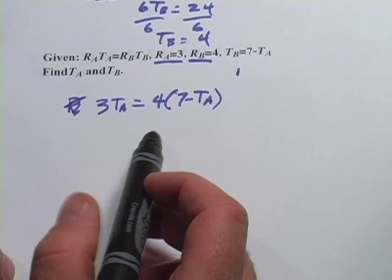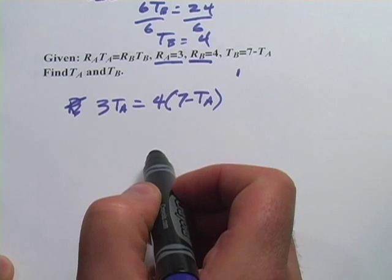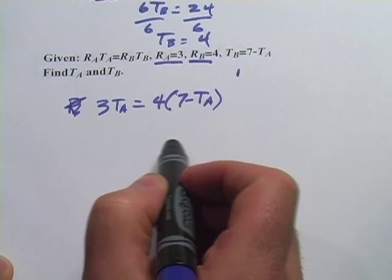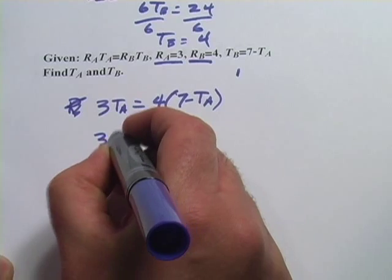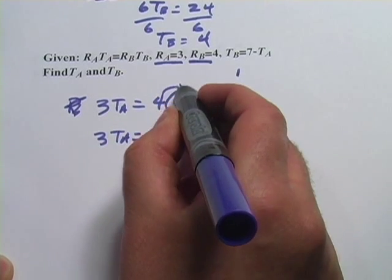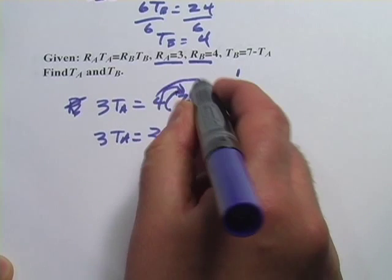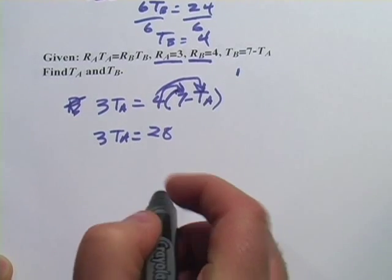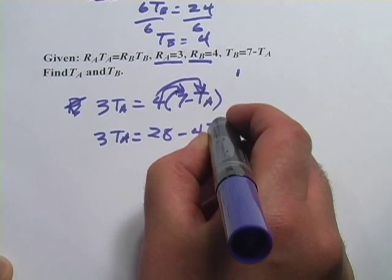And suddenly what we have now is an equation with just one variable in it, t sub a. So let's go ahead and solve for that. We've got 3 times t sub a equals, 4 times, we'll distribute this, 4 times 7 is 28. 4 times a negative t sub a is negative 4 t sub a.